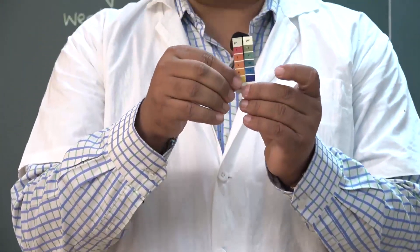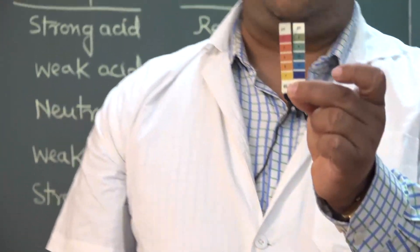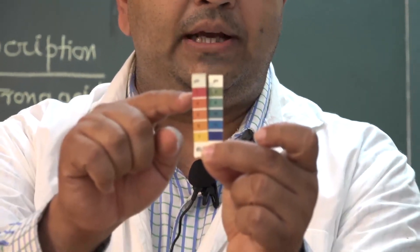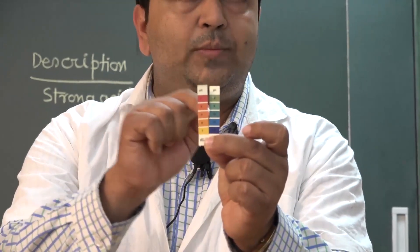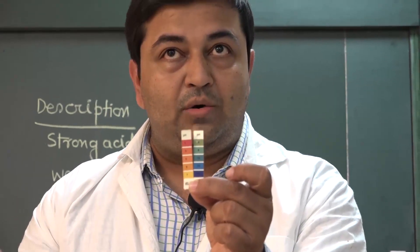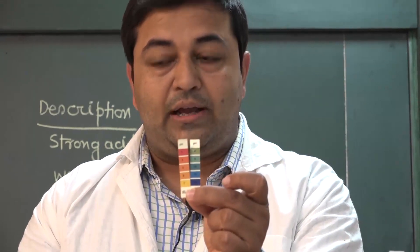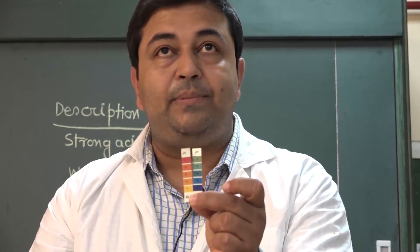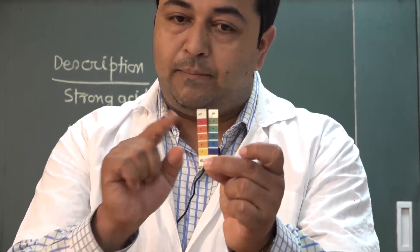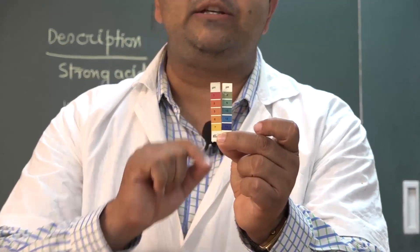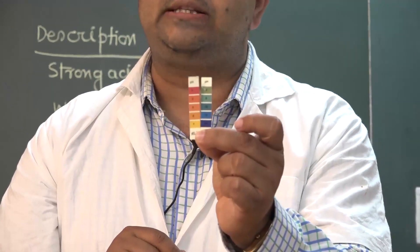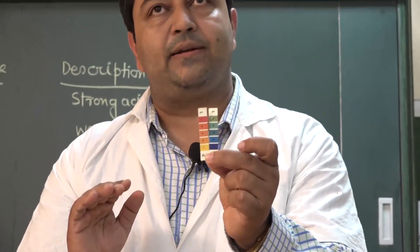This is the pH scale. At each particular pH value there is a corresponding color, and everything is mentioned on this pH paper. Now one by one we will collect the pH paper from each solution and match its color with the pH scale. From that we can determine whether the solution is acidic or basic.